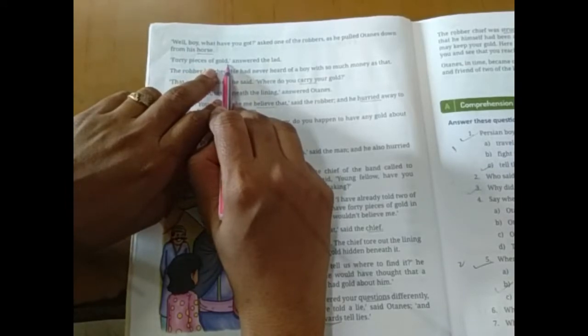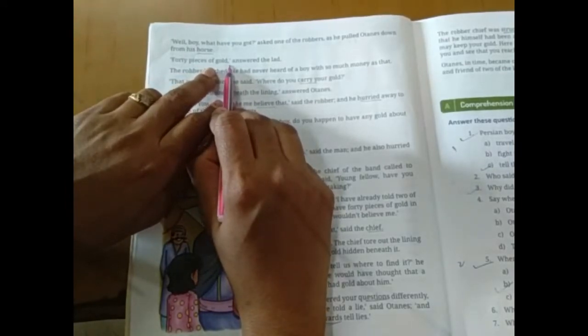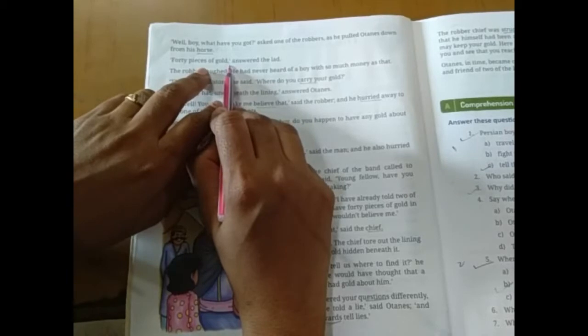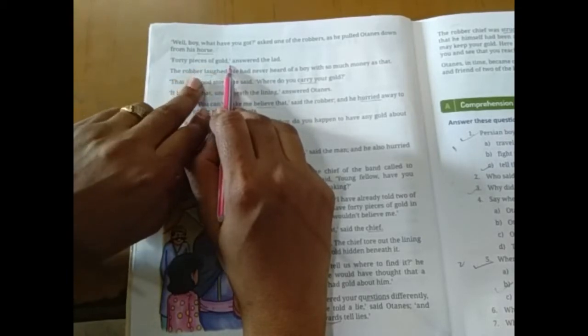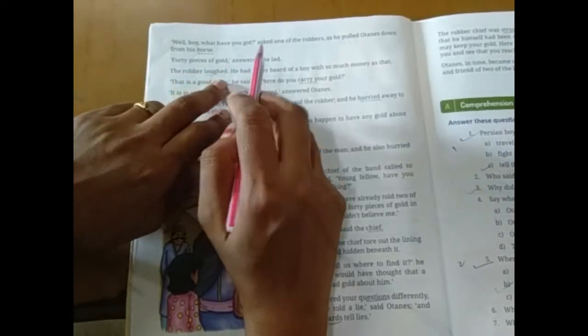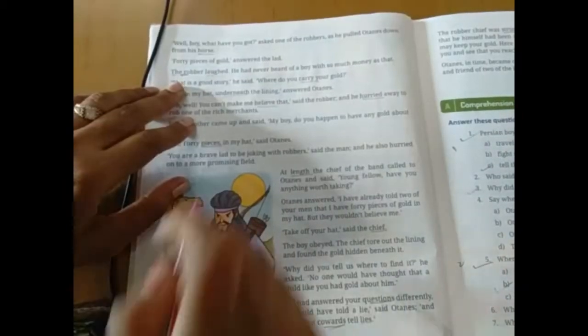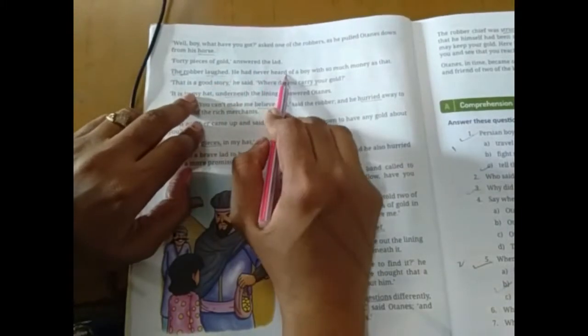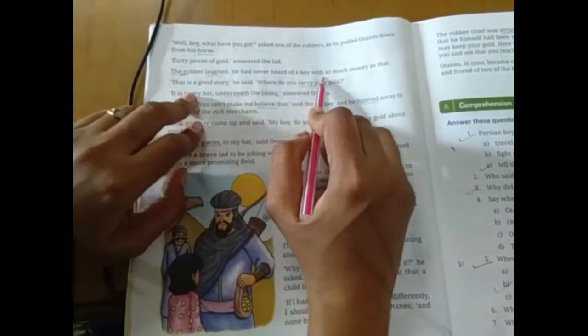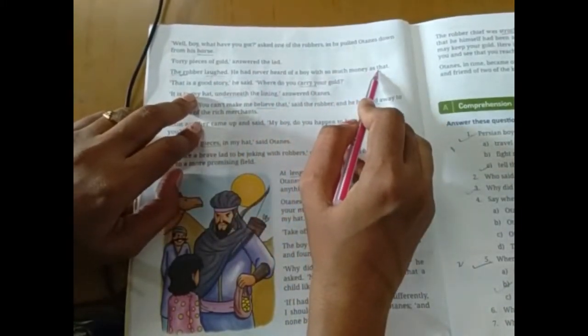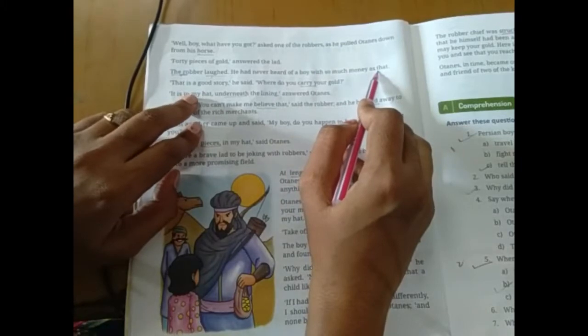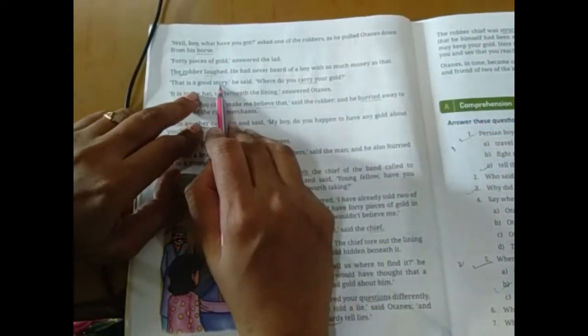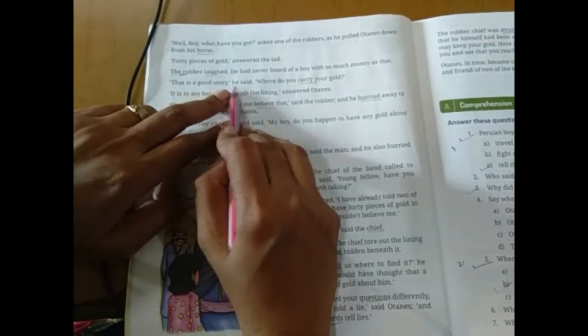As he pulled Hortense down from his horse. Horse se usko neeche utara chata hai. 40 pieces of gold, answer the lead. Uske paas kya hai? Answer kya diya? Ek chhote bachhe ne? Uske paas 40 pieces hai. 40 piece, yani ki 40 coin hai uske paas. Toh robbers laughed. He had never heard of a boy with so much money and debt. That is a good story, he said.